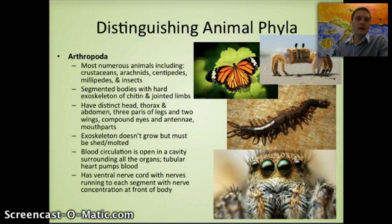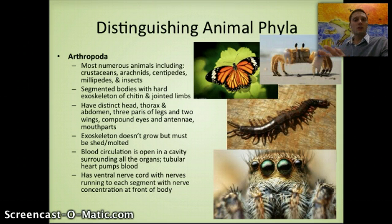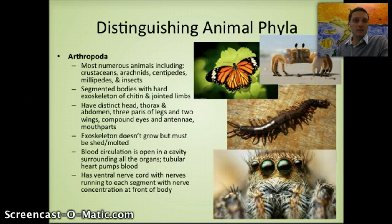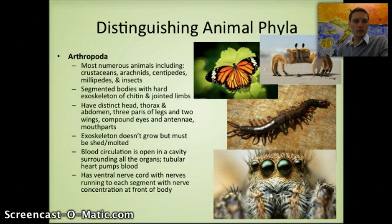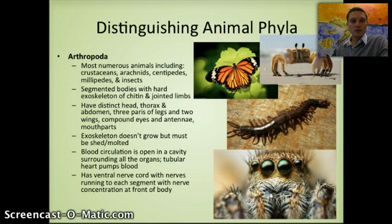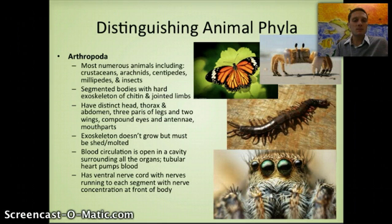The last animal phylum is Arthropoda — one of the most numerous groups on the planet, including crustaceans, arachnids, centipedes, millipedes, and insects. They're literally everywhere. They typically have segmented bodies with hard exoskeletons, a distinct head, thorax and abdomen, three pairs of legs, two wings, compound eyes, antennae, and mouthparts. Blood circulation occurs in an open cavity surrounding all organs, and they have a ventral nerve cord with nerves running to each body segment. This is a hugely diverse phylum, though not the only one in the animal kingdom — just the ones required for IB.